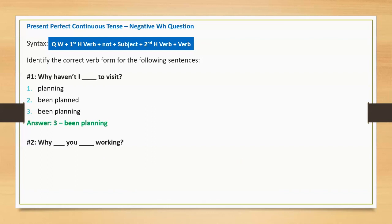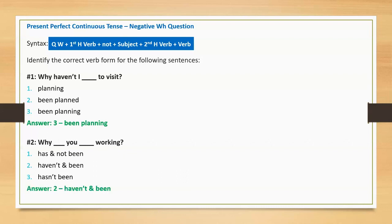Sentence two: 'Why blank you blank working?' Option one: has and not been. Option two: haven't and been. Option three: hasn't and been. Correct answer: haven't and been. Full sentence: 'Why haven't you been working?'